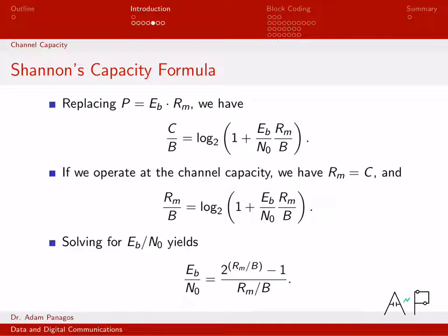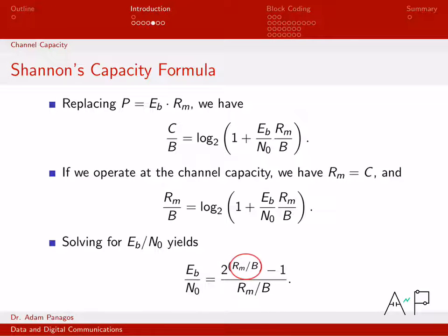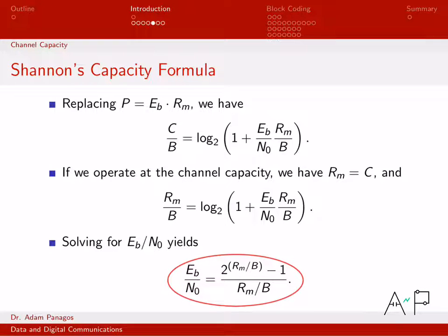This form of the equation is nice — it's parameterized as signal-to-noise ratio as a function of data rate over bandwidth. Data rate over bandwidth is a key parameter. As the ratio Rm/B gets larger, communication becomes harder and more SNR is needed. As this ratio gets smaller — meaning the data rate is small relative to the available bandwidth — communication gets easier and a smaller SNR suffices. We can go ahead and plot this curve.